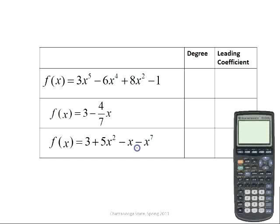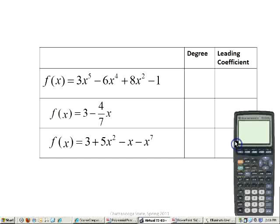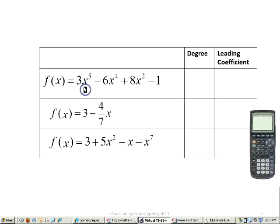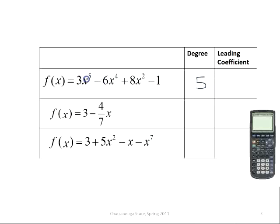So let's look at a couple of polynomial functions and determine what the degree and the leading coefficients are. This first function is 3x to the fifth minus 6x to the fourth plus 8x squared minus 1. The exponents are in descending order, so the first term is used to determine the degree. The degree is 5 because it's the largest exponent, and the leading coefficient is 3.